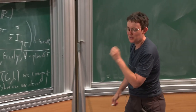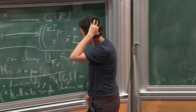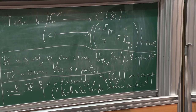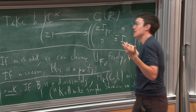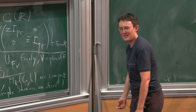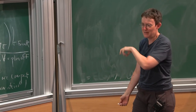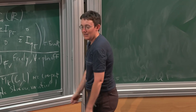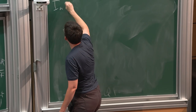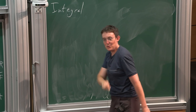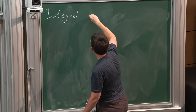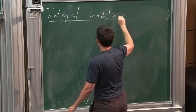It also has another property that's a bit more technical: it has a very simple trace formula because it doesn't have any global endoscopy groups, for example. We didn't get into the stabilization of the trace formula yet, but when Tasho explains it, this will make more sense.